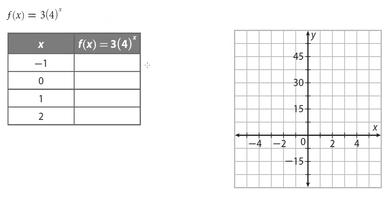Now let's look at the function f of x equals 3 times 4 to the x power. Our a value is 3 and our b value is 4. Since a is positive and b is greater than 1, we know this is going to be an increasing positive graph — it will curve upward above the x-axis.